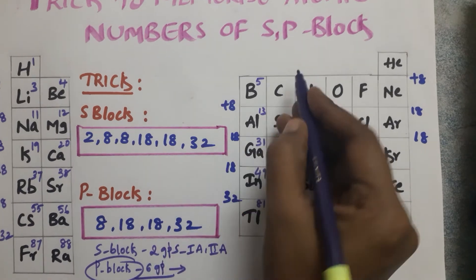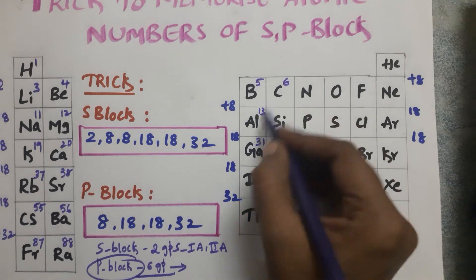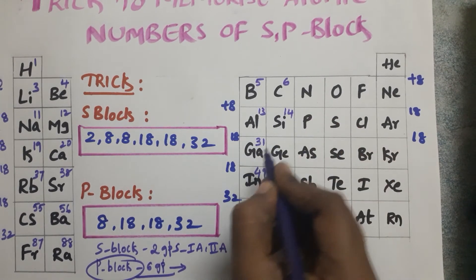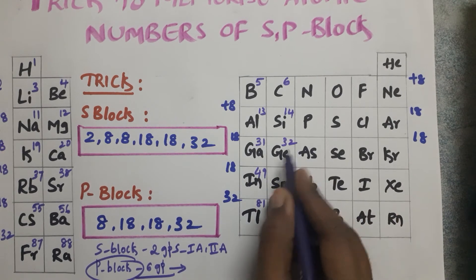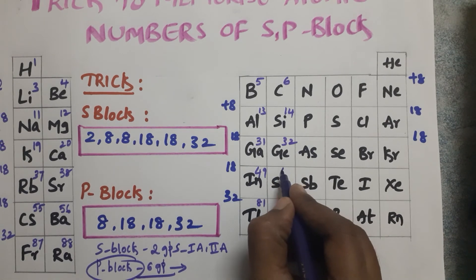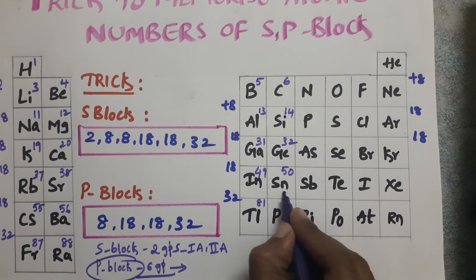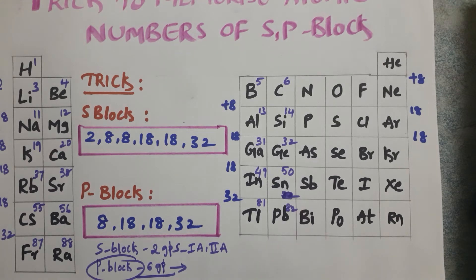After boron, carbon has atomic number 6. Then 6 plus 8 equals 14 (silicon), 14 plus 18 equals 32 (germanium), 32 plus 18 equals 50 (tin), and 50 plus 32 equals 82, which is lead.